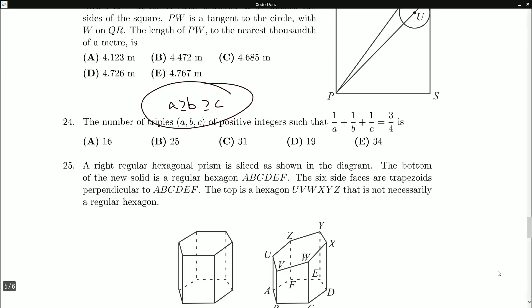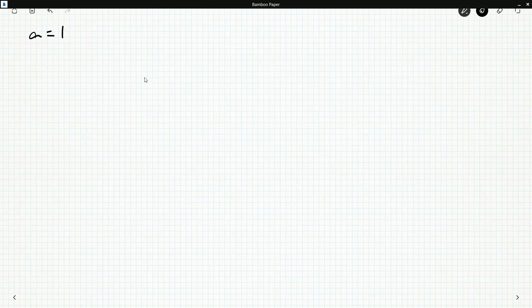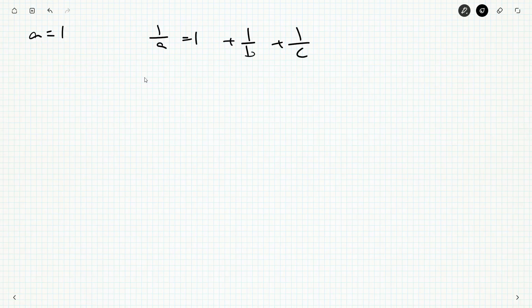What happens if A is 1? Now we want positive integers. So if A is 1, then 1 over A is 1. And if I add something positive to both of those, that's definitely greater than 3 quarters, because 1 itself is greater than 3 quarters. So there are no cases when A is 1.